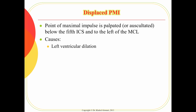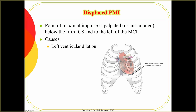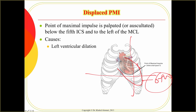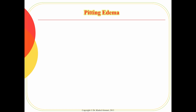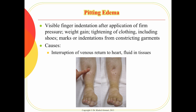The PMI normally is at the midclavicular line with the fifth intercostal space — that's where the apex is. In some cases when the heart becomes hypertrophic and larger, such as in heart failure, the PMI may shift to the sixth intercostal space instead of the fifth. This indicates the heart is becoming enlarged, which is not a good sign.